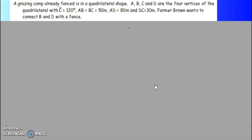AB equals BC equals 50 meters, AD equals 80 meters and DC equals 30 meters. Farmer Brown wants to connect B and D with a fence.